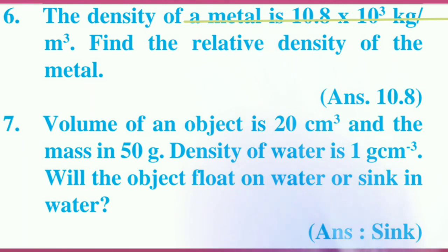Let us move towards the first example. The density of a metal is given, it is 10.8 into 10 raise to 3 kg per meter cube. Find the relative density of the metal. Now students, here the answer is given 10.8 and we are going to see how the answer comes.